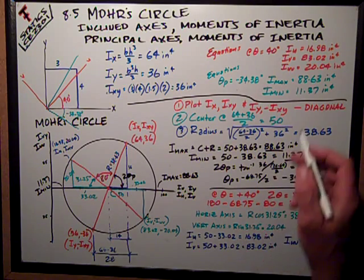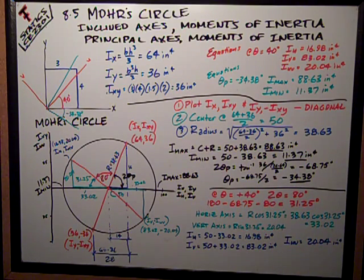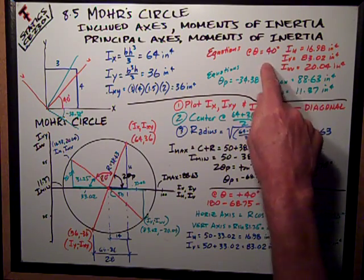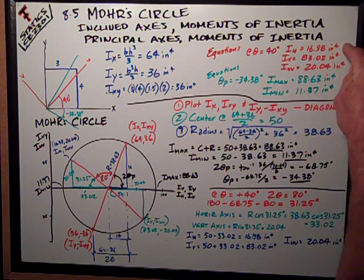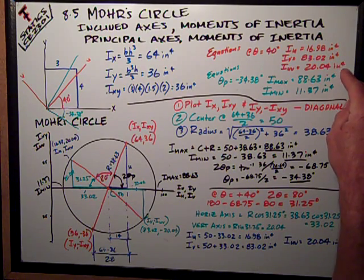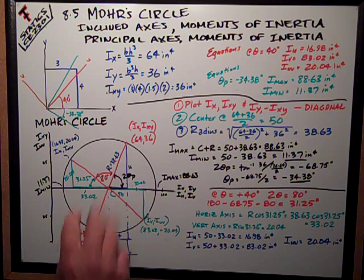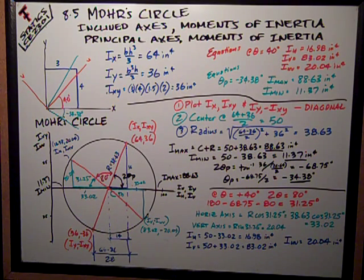Check that with the values I got by equations. For the 40 degree angle of rotation, I get the same values, 16.98, 83.02, and 20.04. So that's the beauty of Mohr's circle. It presents it all in one location, and I can, through a little geometry and triangles, I can figure out any moment of inertia or product of inertia for a given shape.